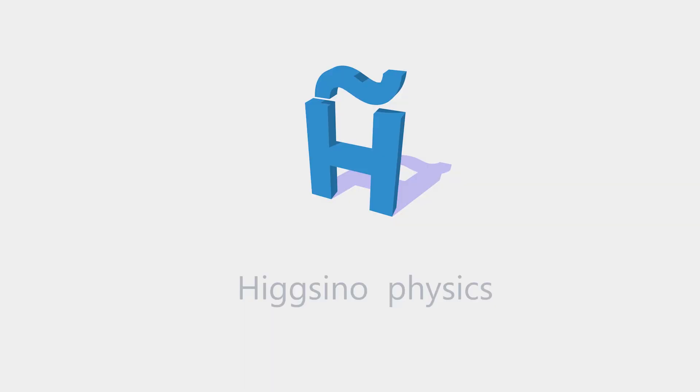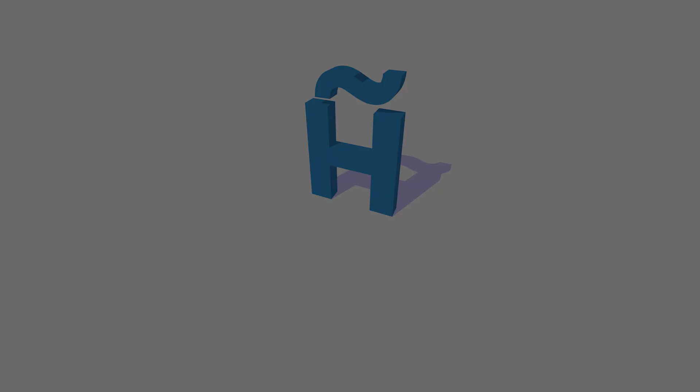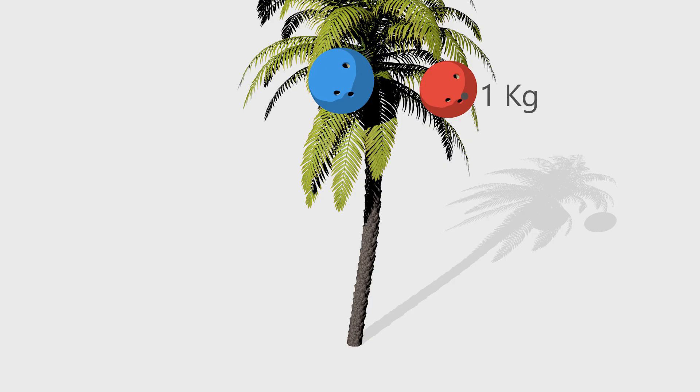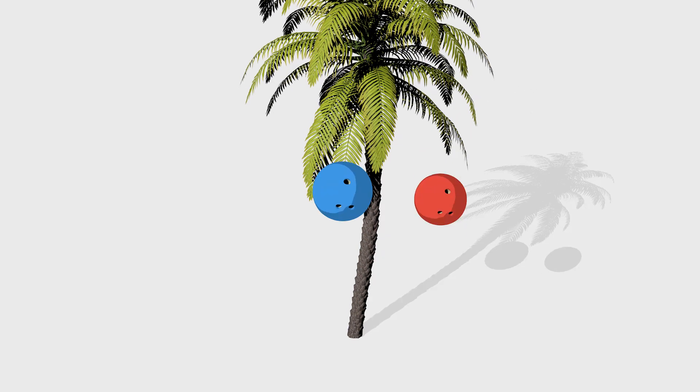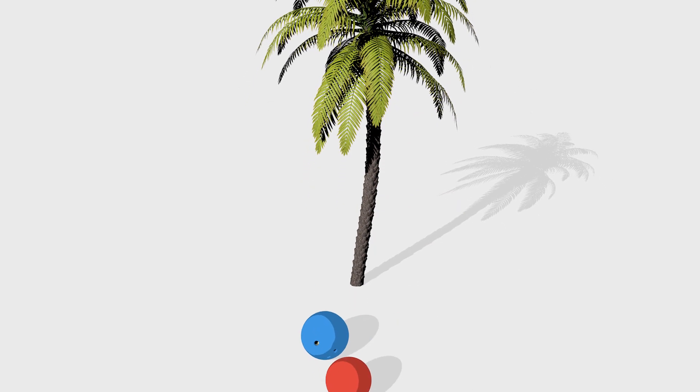So we heard it again and again. Objects with the same mass fall with the same speed. If I drop a 1kg bowling ball, it will hit the ground at the same time as a 2kg bowling ball. Or if I drop a hammer and a feather in vacuum, they will hit the ground at the same time.